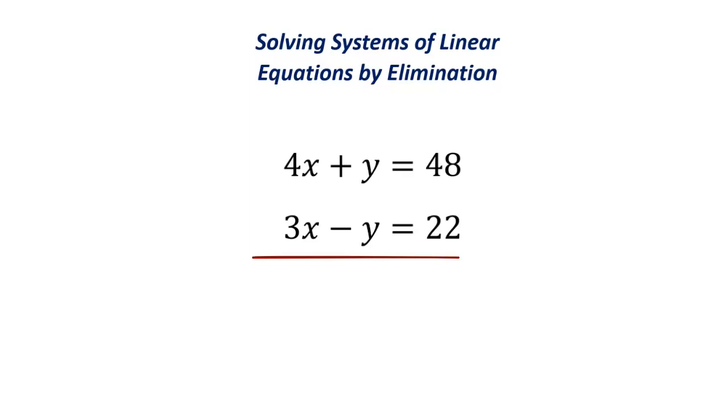Now, the first thing that I want you to do, once you've gotten your equation all lined up, variables on top of variables and the constants on the other side, what I want you to do is look and see, do one of the variables already cancel out? So if you look, 4x and 3x, that would just give a 7x. That doesn't cancel out. But y minus y, that cancels right out.